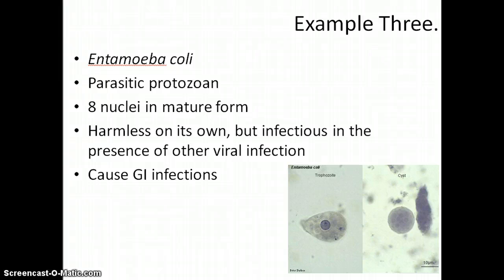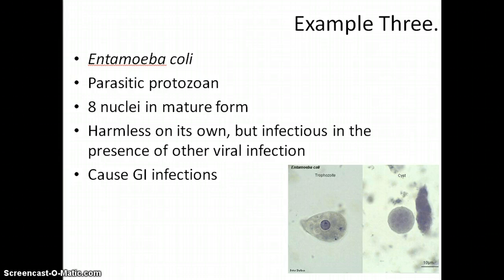Entamoeba coli, which can also be written as E. coli, not to be confused with the bacteria, is another parasitic protozoan. This one can be distinguished from the first example, histolytica, by the fact that it has eight nuclei in its mature form instead of just four. This one is unique because it is actually not harmful on its own, but only infectious in the presence of another viral infection. It causes GI infections as well.